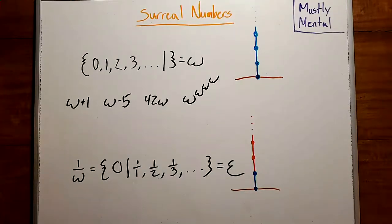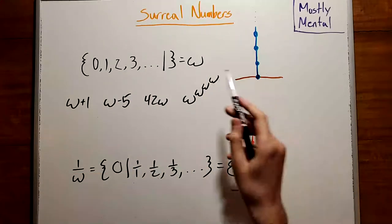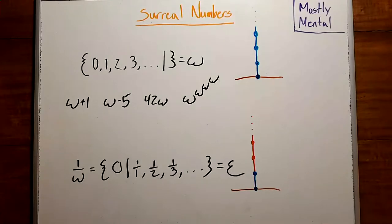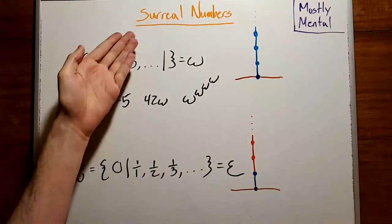And the collection of numbers that we can create this way, including omega, epsilon, and every combination, is known as the surreal numbers.